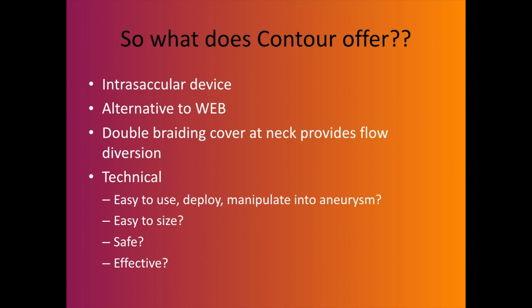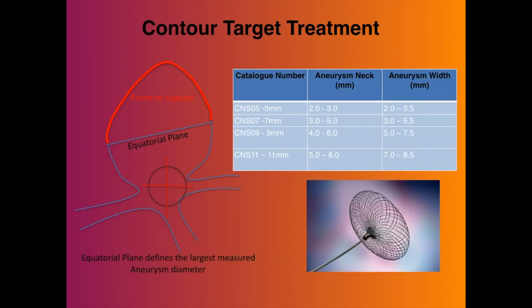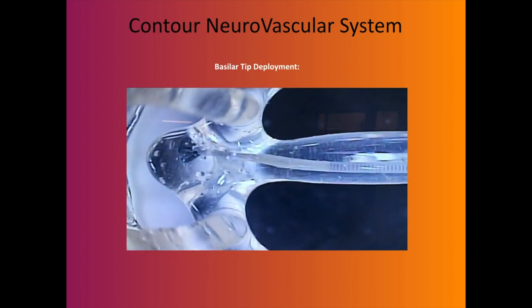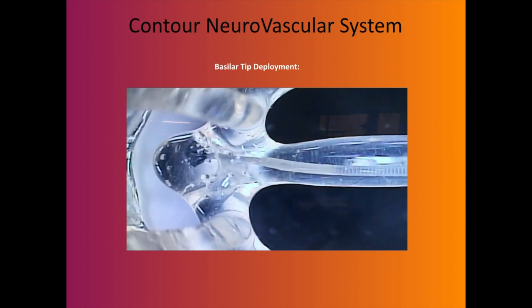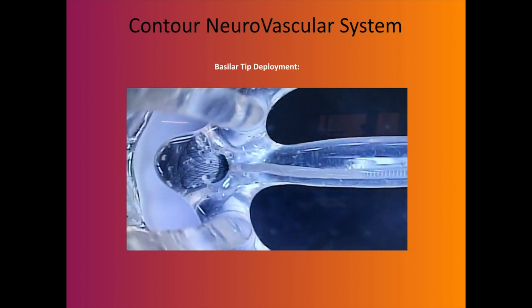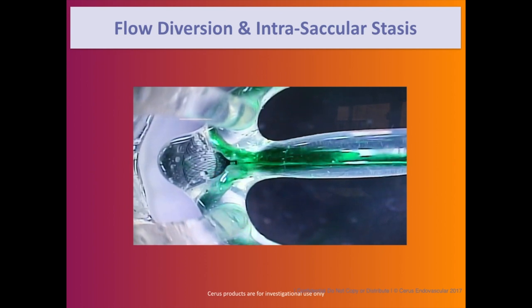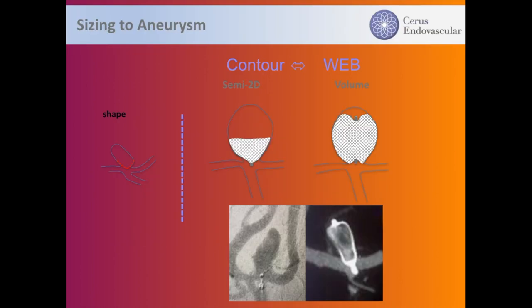Contour is a very good alternative — it has double braiding at the neck, is safe, and very effective. It is a 19 system device with limited sizes but can be deployed at the neck of the aneurysm. You open the device and bring it to the neck to deploy. It provides good flow diversion — when contrast is injected it goes around the device. Comparing WEB versus Contour: Contour is a neck bridging device whereas WEB occupies the volume of the aneurysm.